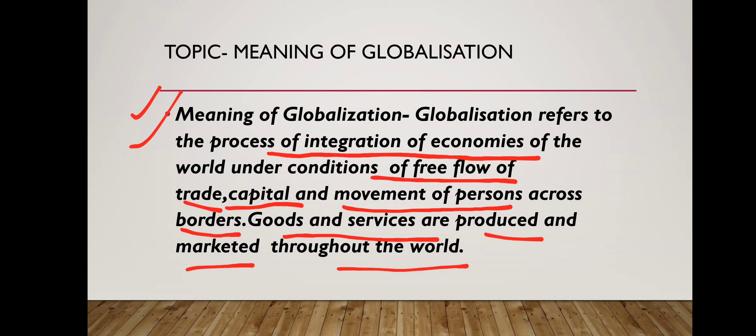Under globalization, goods and services are not only produced but also marketed throughout the world. What does this process include? It includes increases in foreign trade — import and export, flow of technology, flow of capital from one country to another, and migration of people. It leads to cultural exchange, expansion of trade, job opportunities, and improved living standards. This is how globalization has an impact on society.